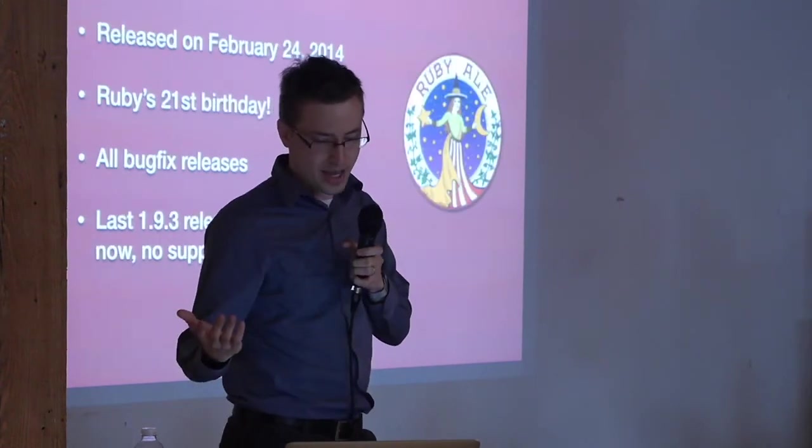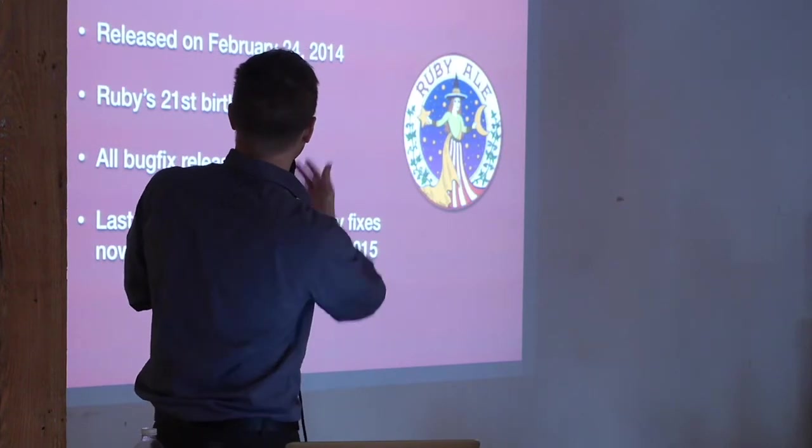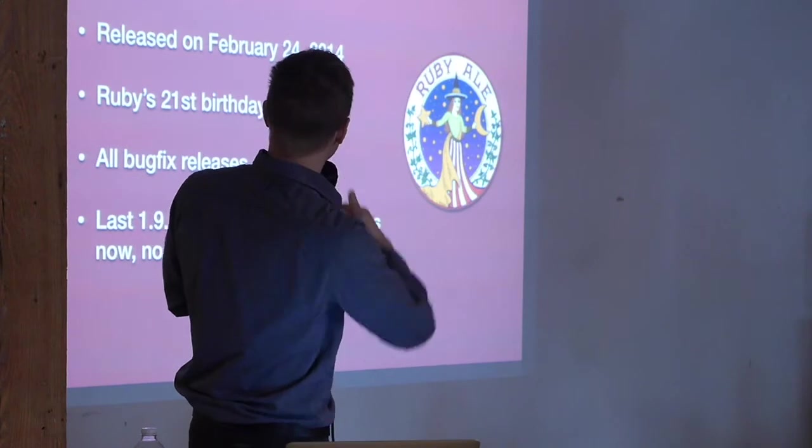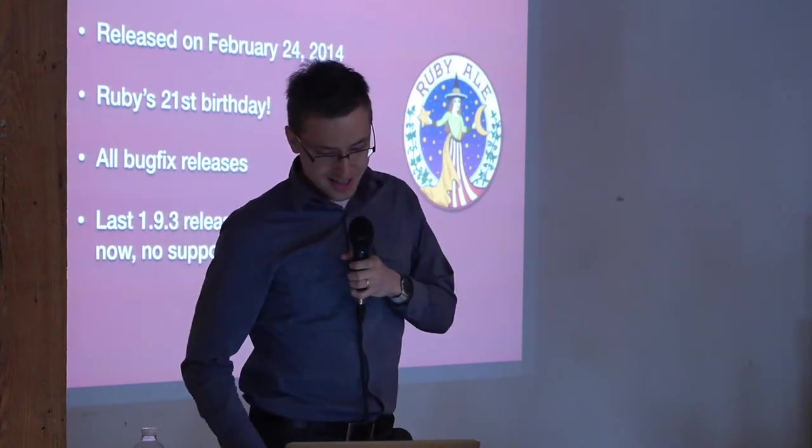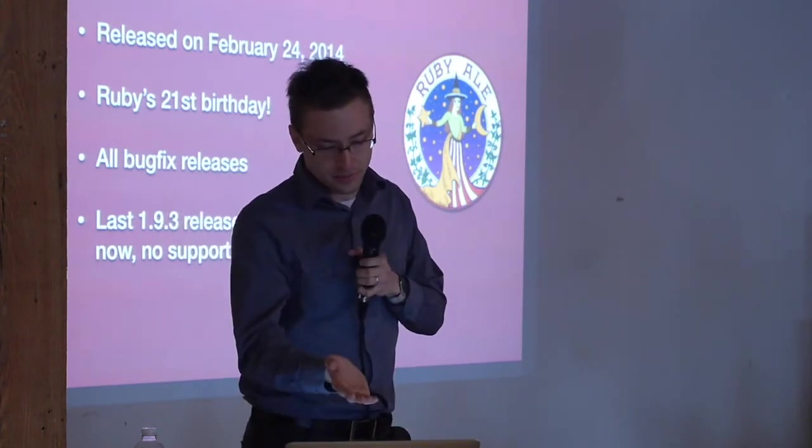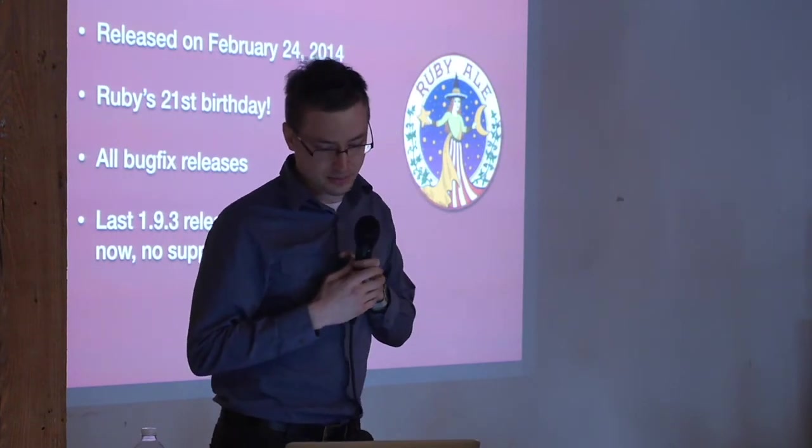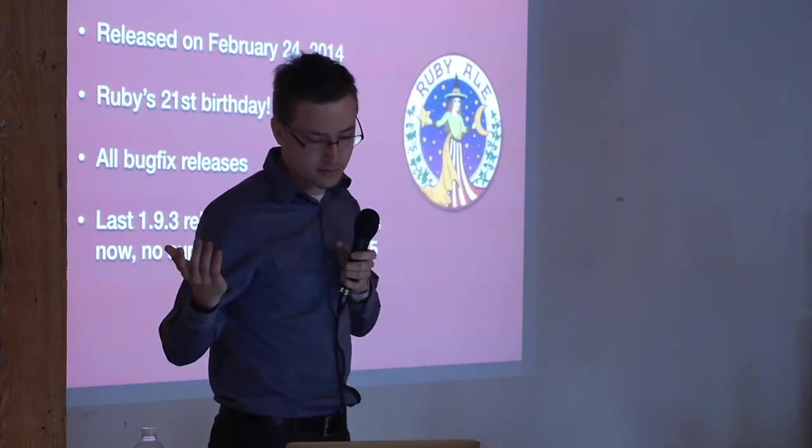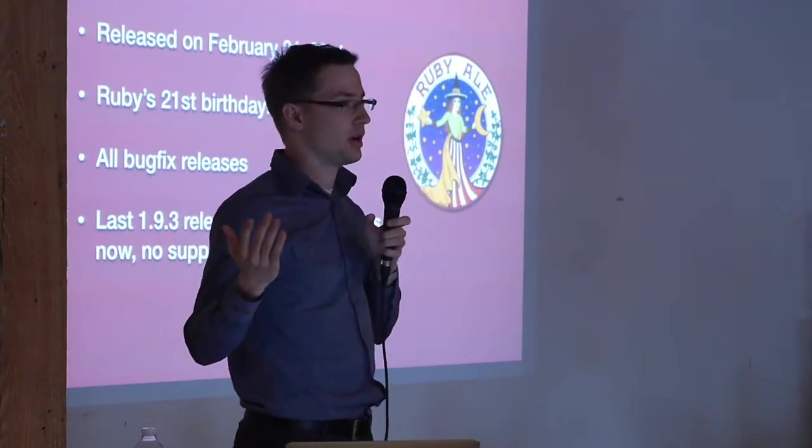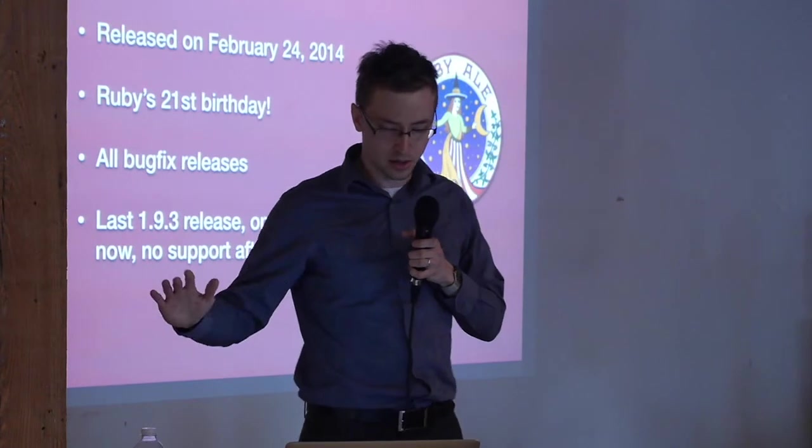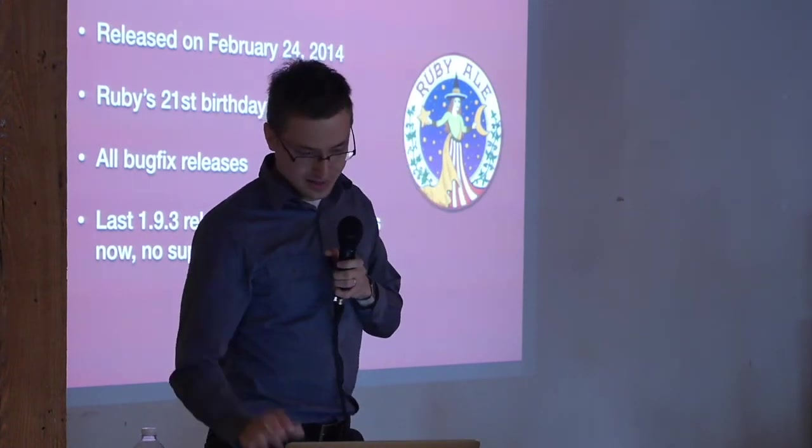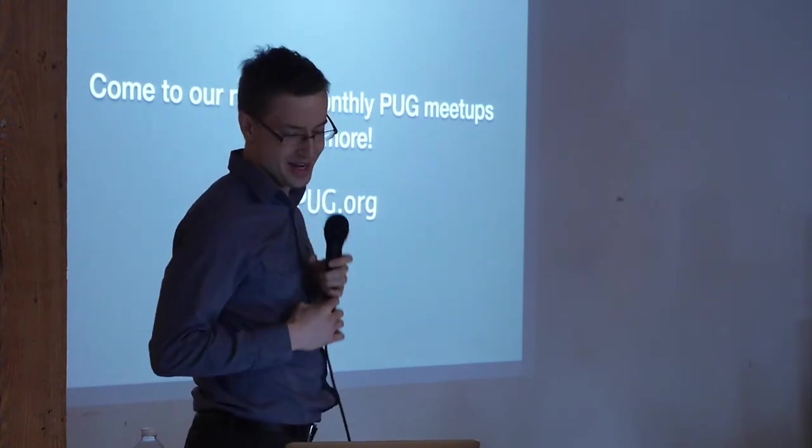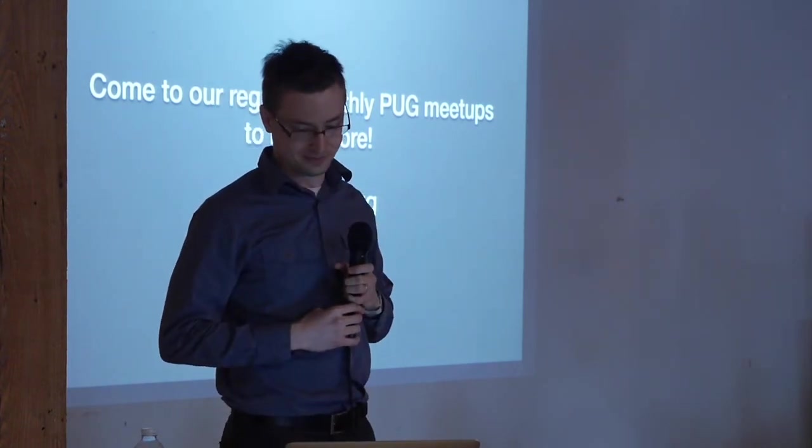So finally, where are we at right now? These are the latest releases. They were released in February. It's now Ruby's 21st birthday, as of February 24th, so it can now drink Ruby ale. And these are all bug fix releases, so nothing too big. It's the last 1.9.3 release. You'll only get security fixes from now on, and after February of 2015, no more support. So that's my last slide, and thank you very much. Come to our Philly pod meetings. Thank you very much.